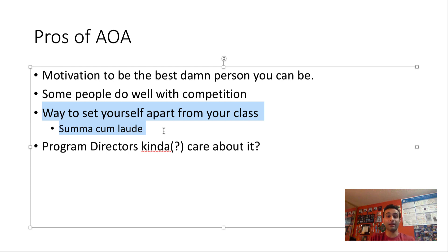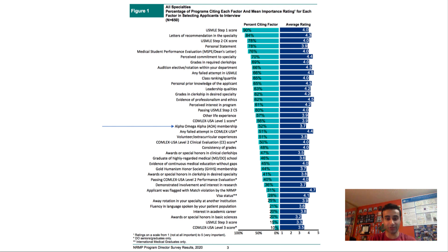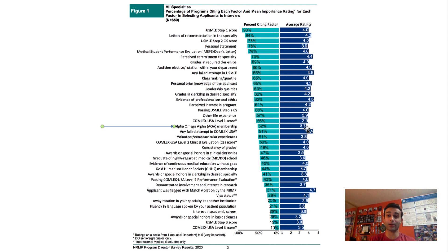A lot of people who have AOA may end up being better ranked for residency programs. Program directors do care about this. This is from the 2020 report from the National Residency Matching Program, and it shows where AOA ranks. Summing up all program directors across multiple specialties — 650 of them — about 52% cited that AOA was important, giving it a ranking of 3.7 out of 5. By no means is that very important, but it clearly shows that some residency program directors do care about AOA, and it serves as a great way to set yourself apart.